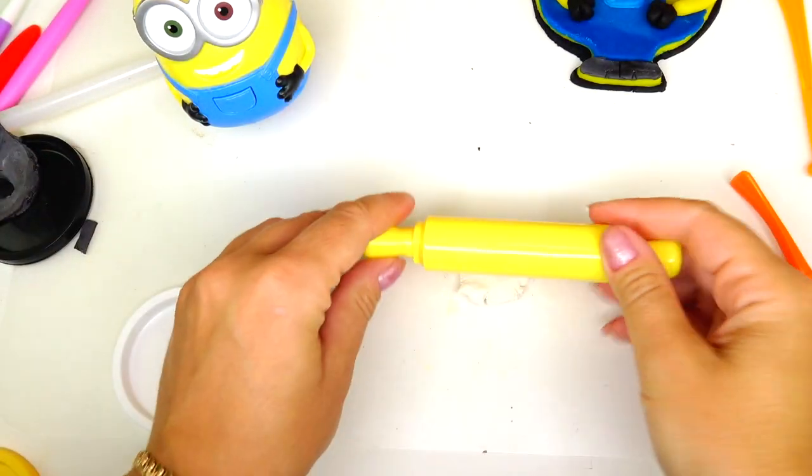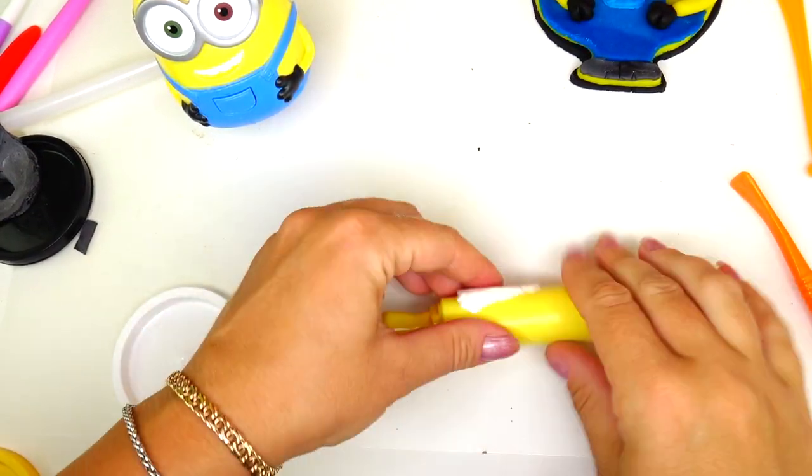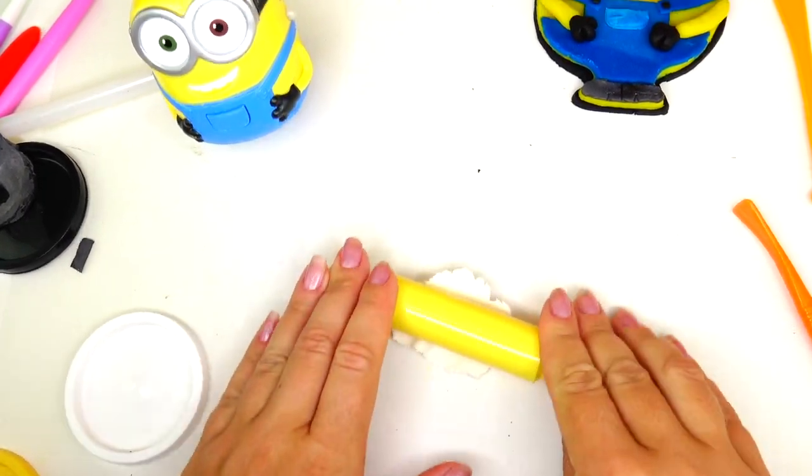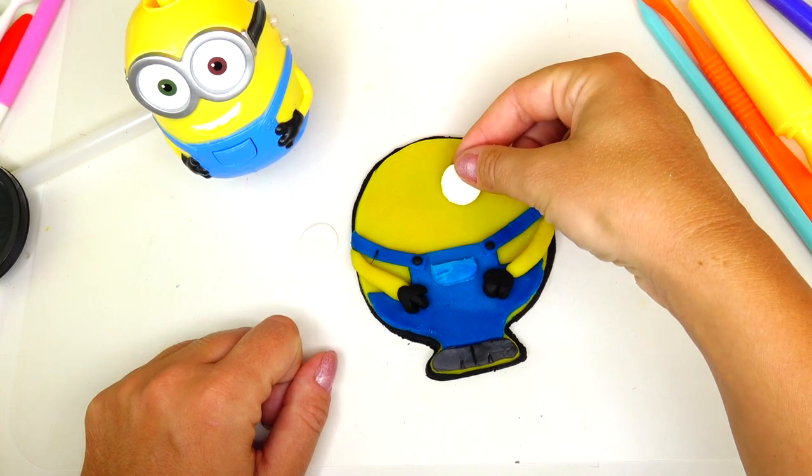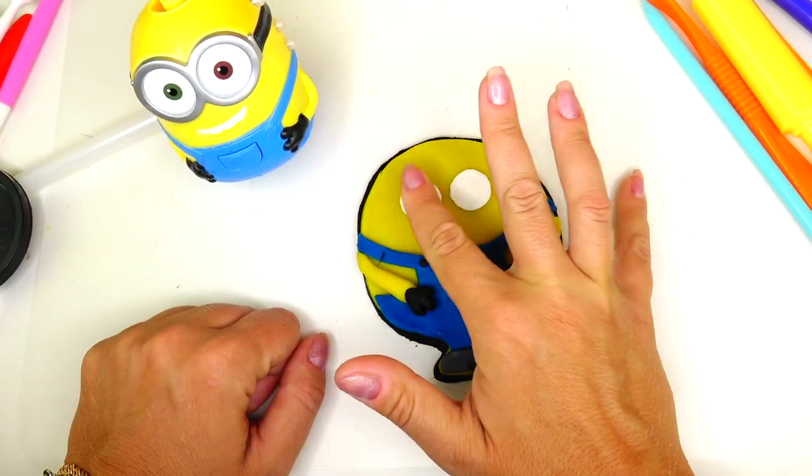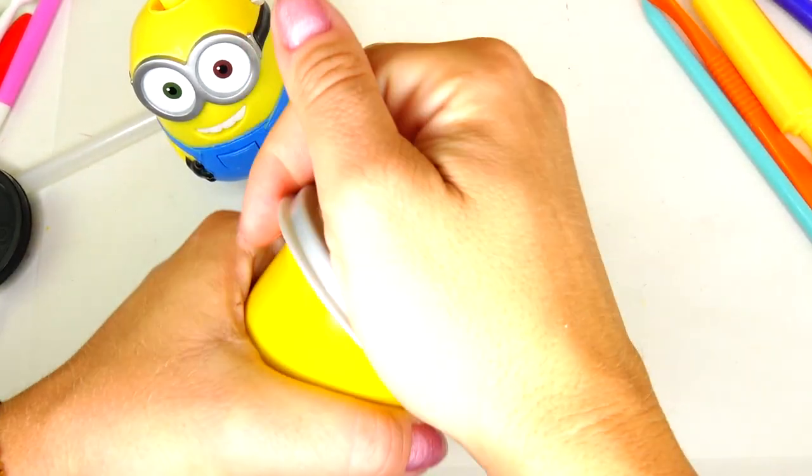Time for the eyes. We need to flatten the dough and we'll need two large size circles. Adding circles in the middle and leaving little space in between for the goggles.